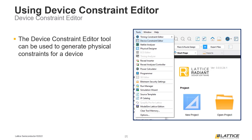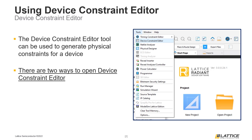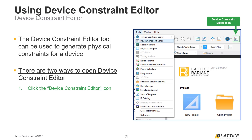One important thing to note is that Radiant's Device Constraint Editor is not the only way to create physical constraints for a device, and users can also create or import physical constraints if they desire. There are two ways the Device Constraint Editor Tool can be launched. The first way is to select its icon from the Radiant Toolbar. The second way is to select Tools from Radiant's menu bar and then Device Constraint Editor from the drop-down list of options that appears.